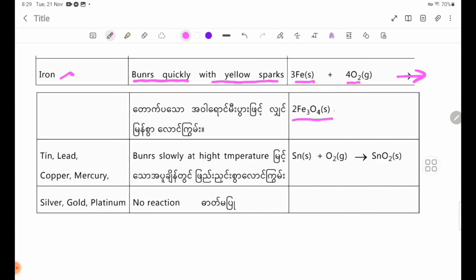Tin and lead burn slowly at high temperature. For tin, the reaction is: Sn(s) + O2(g) → SnO2, producing tin dioxide. Copper and mercury also react at high temperatures.